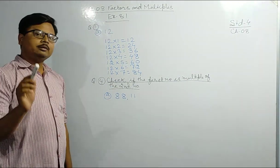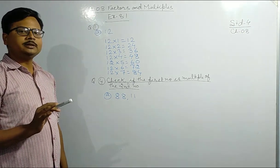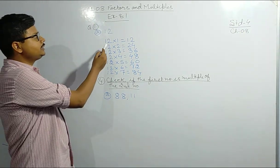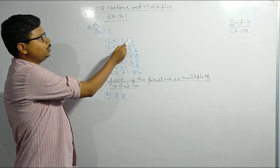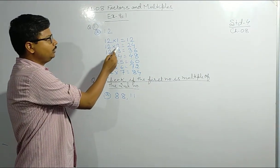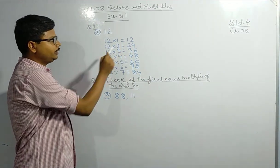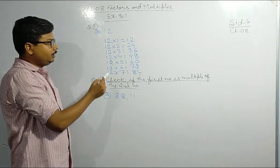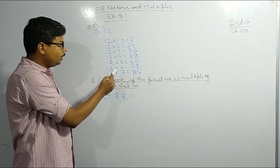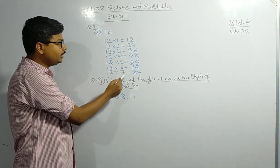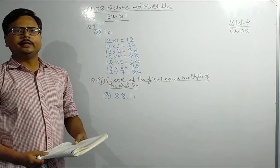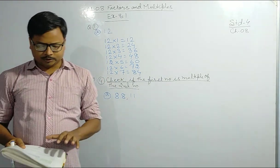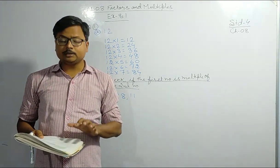We have to write seven multiples of twelve, meaning we write the table of twelve up to seven. So: twelve ones are twelve, twelve twos are twenty-four, twelve threes are thirty-six, twelve fours are forty-eight, twelve fives are sixty, twelve sixes are seventy-two, and twelve sevens are eighty-four. In this way, you have to do the rest of the questions.